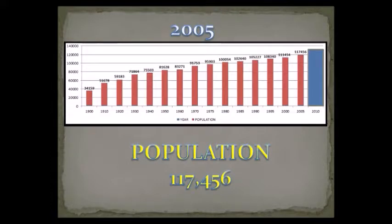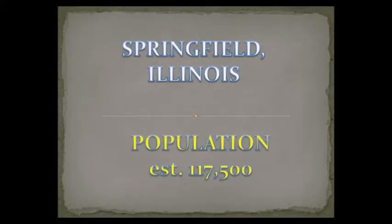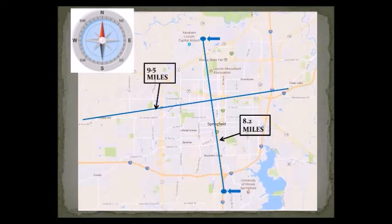In 2005, five years later: 117,456. Our final official record is 2010, with a population of 116,250 — it dropped by about 1,000. But just the following couple of years, they made an estimation based on things Springfield was doing, and here's what they wrote on our signs: Springfield, Illinois — the estimate is 117,500. The same area that 20,000 people once fit into now holds 117,000 people.